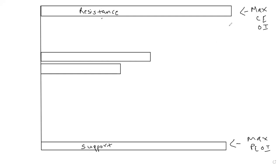The strike price with the highest call open interest is the resistance level; the strike price with the highest put open interest is the support level. When we look at open interest data, we look at it from a writer's or seller's perspective — assuming that on the strike price with the highest calls, the instrument might not surpass this level. Support is basically where the highest put writers have sold their puts.